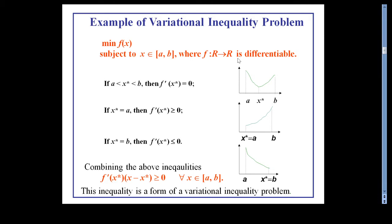Suppose x* is a point of minimum of this problem. If x* lies between a and b, then f'(x*) = 0. If x* equals a, the graph shows f'(x*) ≥ 0. If x* equals b, then f'(x*) ≤ 0. Combining these three cases, we can write that f'(x*) · (y − x*) ≥ 0. Comparing this with the variational inequality problem, capital F is nothing but f'(x*), so this is an example of a variational inequality problem in R.